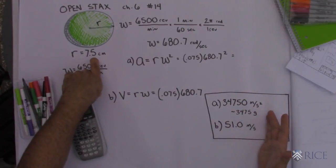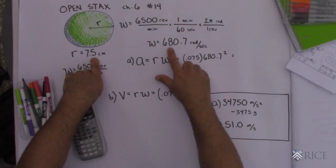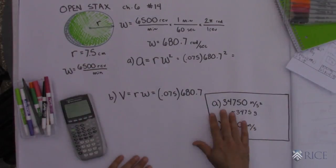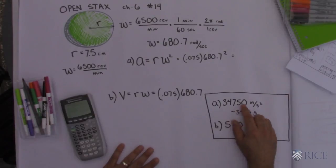It was so big I went back and double checked it. I thought, why is this number so big? And I was like, oh yeah, I took 680 and squared it. So I ended up with a centripetal acceleration of 34,750 meters per second squared.